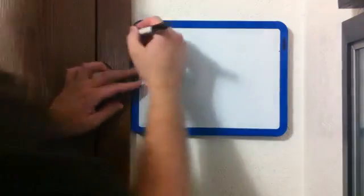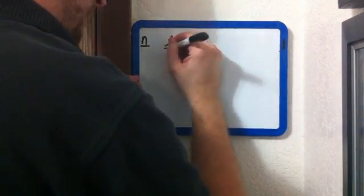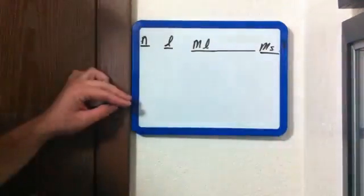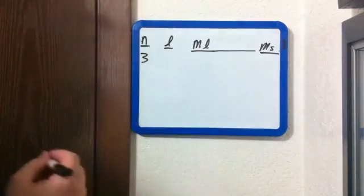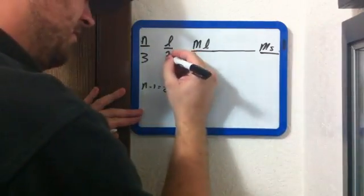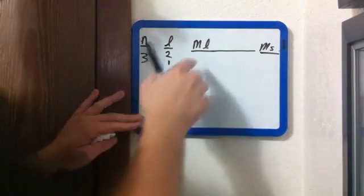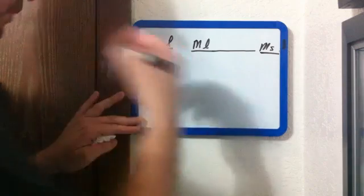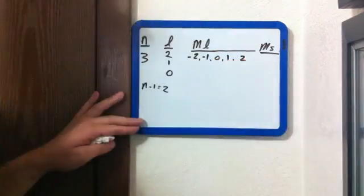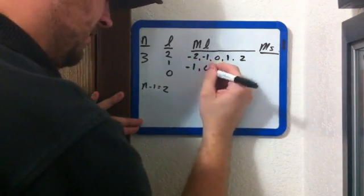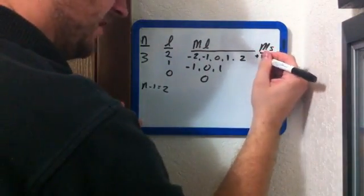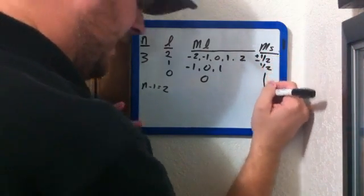Let's take a look at n equals three. So I have n, l, m sub l — going to be bigger — and m sub s, the spin. So n equals three, we're talking about period three. N subtract one equals two, so that's where I start with my l: two, one, zero. Then my m sub l — n subtract one is two, put a negative in front of that — so negative two, negative one, zero, one, and two. Then negative one, zero, and one. And then zero. Spin never changes: plus one half or minus one half.